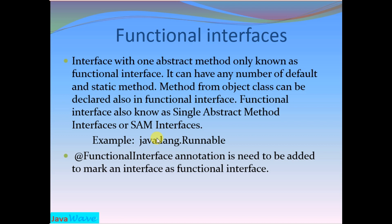Functional interface: an interface with only one abstract method is known as a functional interface. As we all know, interfaces can have any number of abstract methods and there is no need to declare them with the abstract keyword. But after Java 8, interfaces can also have default and static methods. So in Java 8, if an interface has only one abstract method, we can call it a functional interface, and it can have any number of default and static methods.